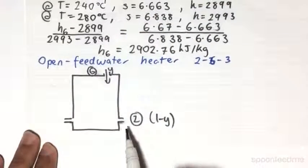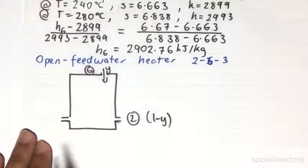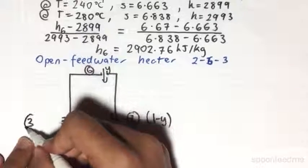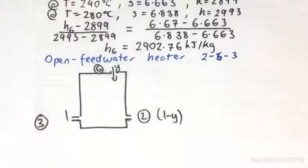And so naturally, from a steady state steady flow, mass flow rate in has to equal mass flow rate out. So at state 3, the mass flow rate out will just be the 1 in terms of the proportion of the mass flow rate.